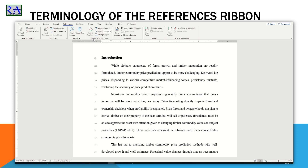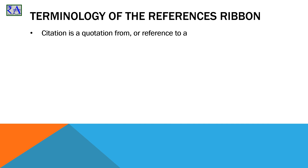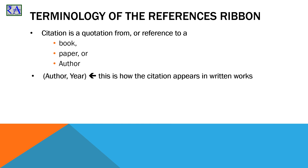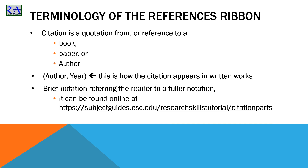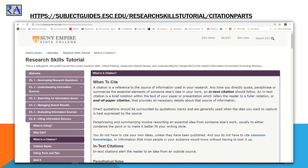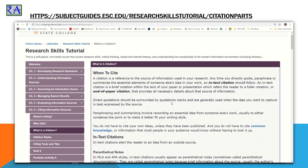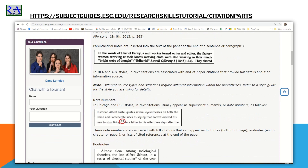First up, there needs to be clarity on the difference between these two terms. A citation is a quotation from or reference to a book, paper, or author in your professional written works. An in-text citation is a brief notation within the text of your paper or presentation which refers the reader to a fuller notation. Generally, in-text references are in parentheses showing the author's last name and the year of publication. This definition came directly from Sunny Empire State College in California, and I need to cite the source of this information — it can be found online at subjectguides.esc.edu.